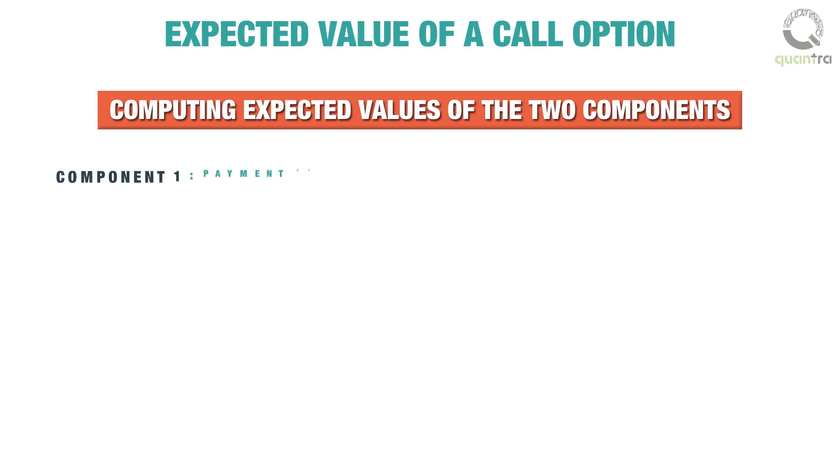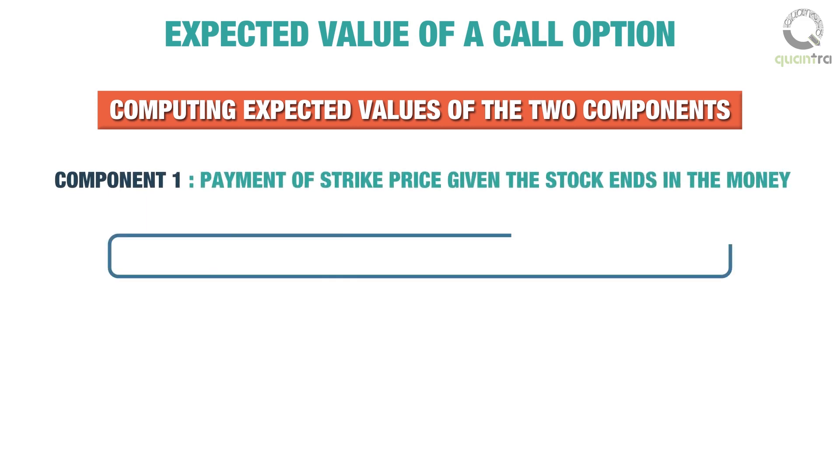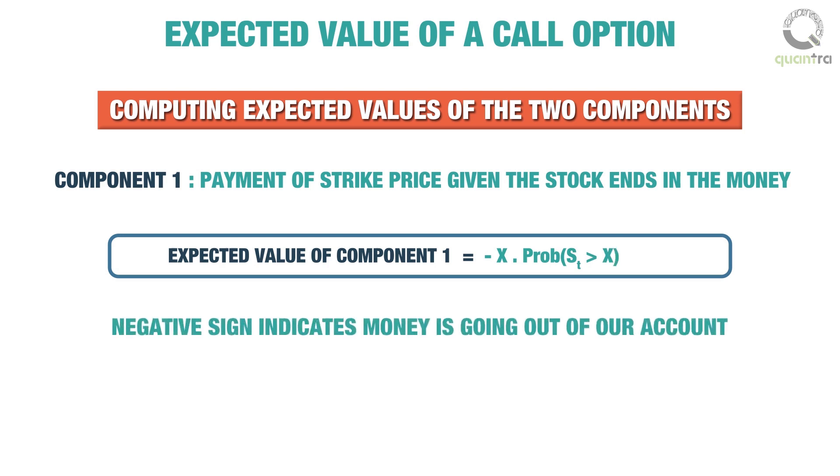The first component is payment of strike price given the stock ends in the money. The expected value will be equal to negative of the strike price X multiplied by the probability of stock price St being greater than strike price X. A negative sign indicates money is going out of our account.